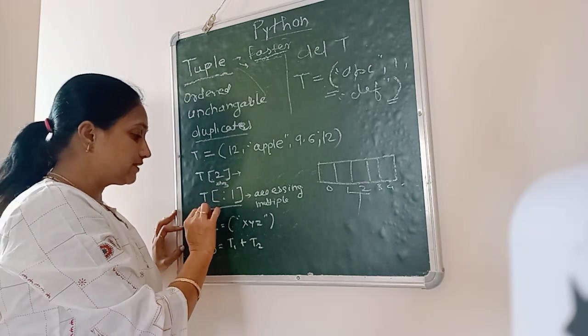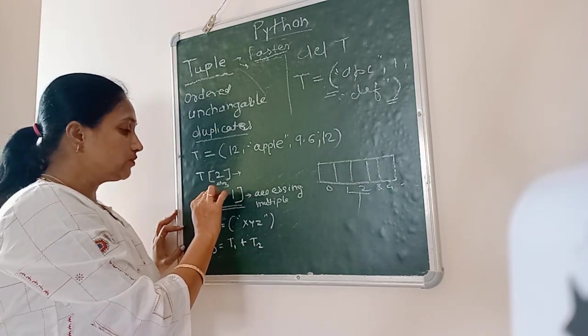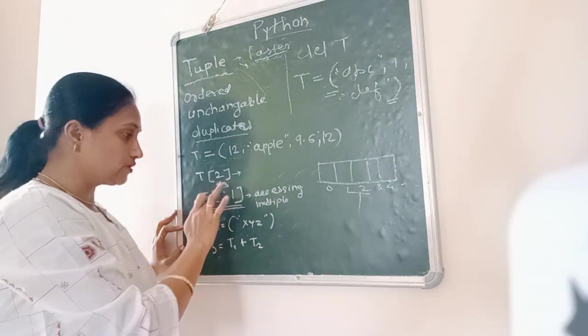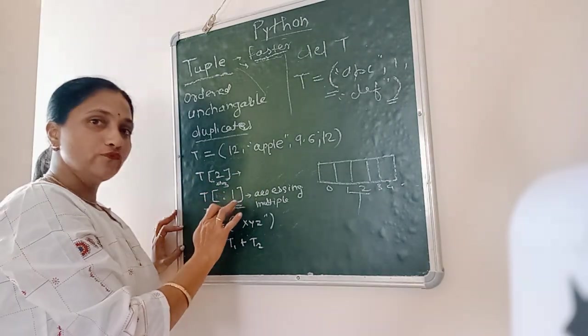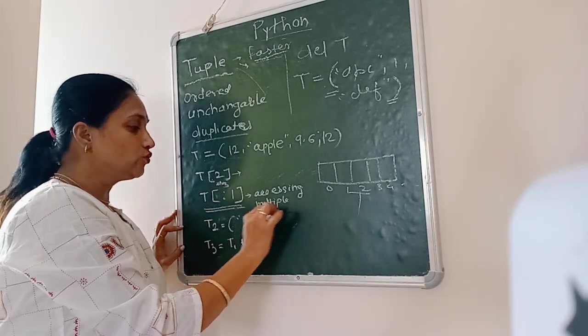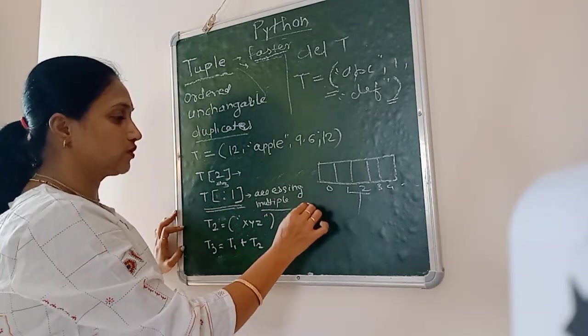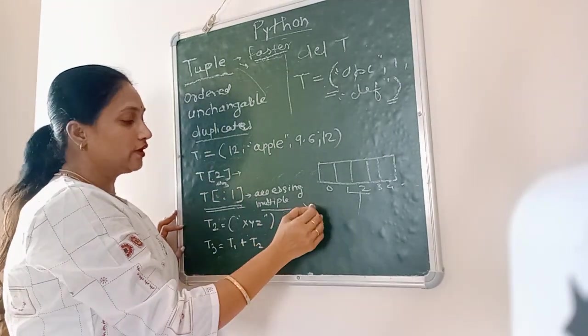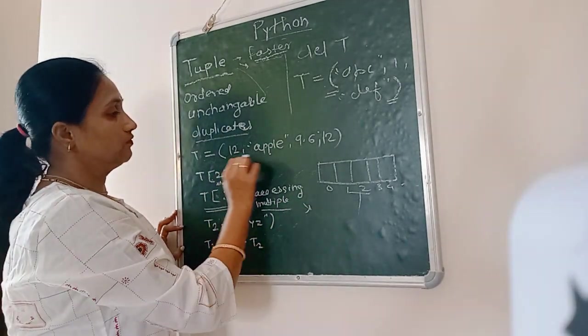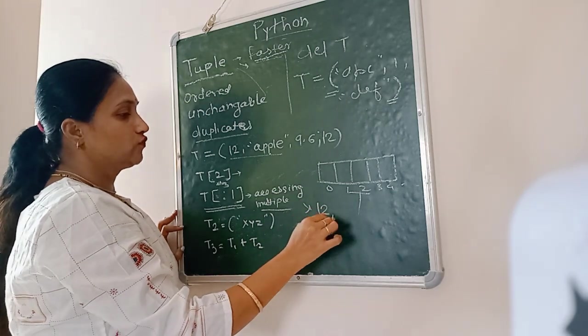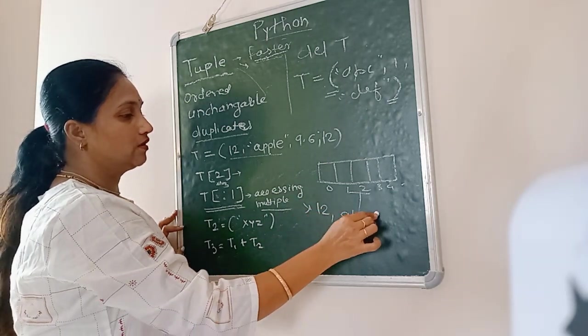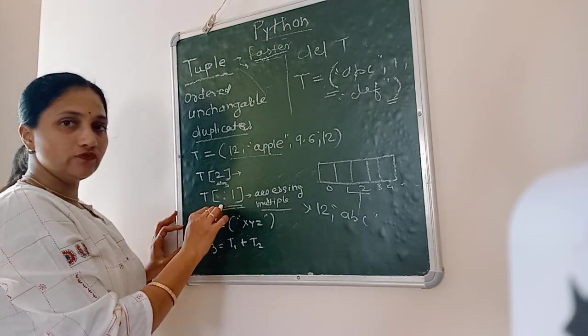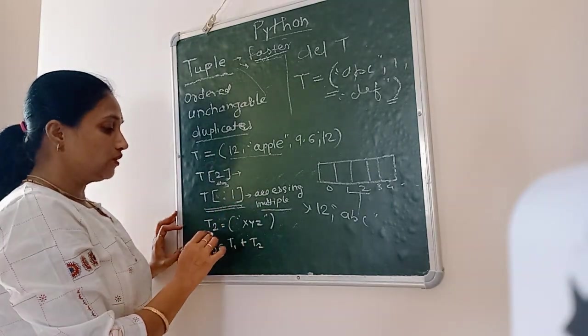Now if suppose you want to access the elements from here, if you mention zero that is okay, otherwise also it is okay. Simply you can write colon one. So this will give you two elements, starting with zero and ending with one. So it will display 12 and abc.